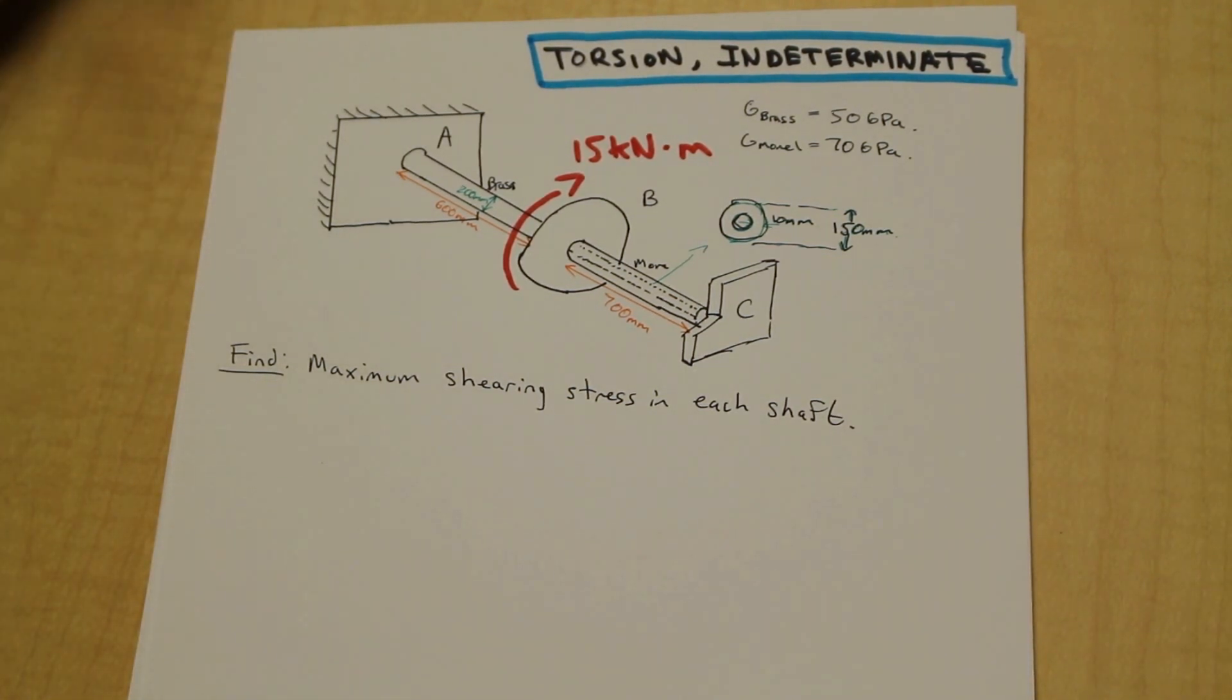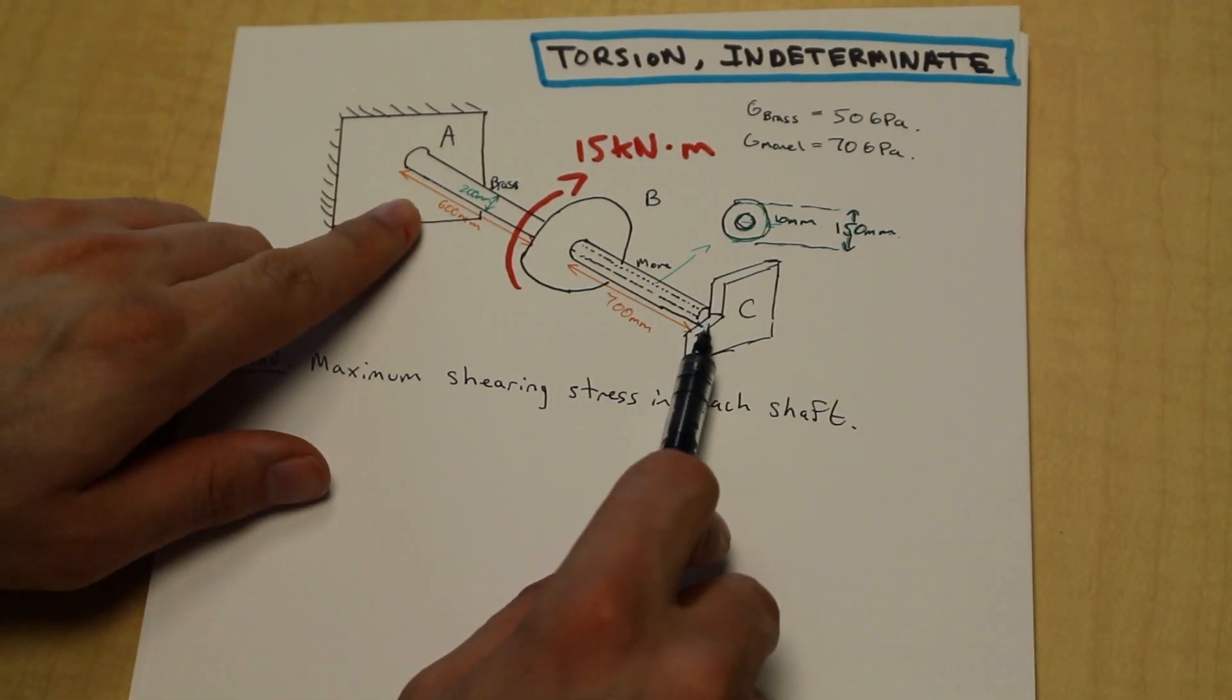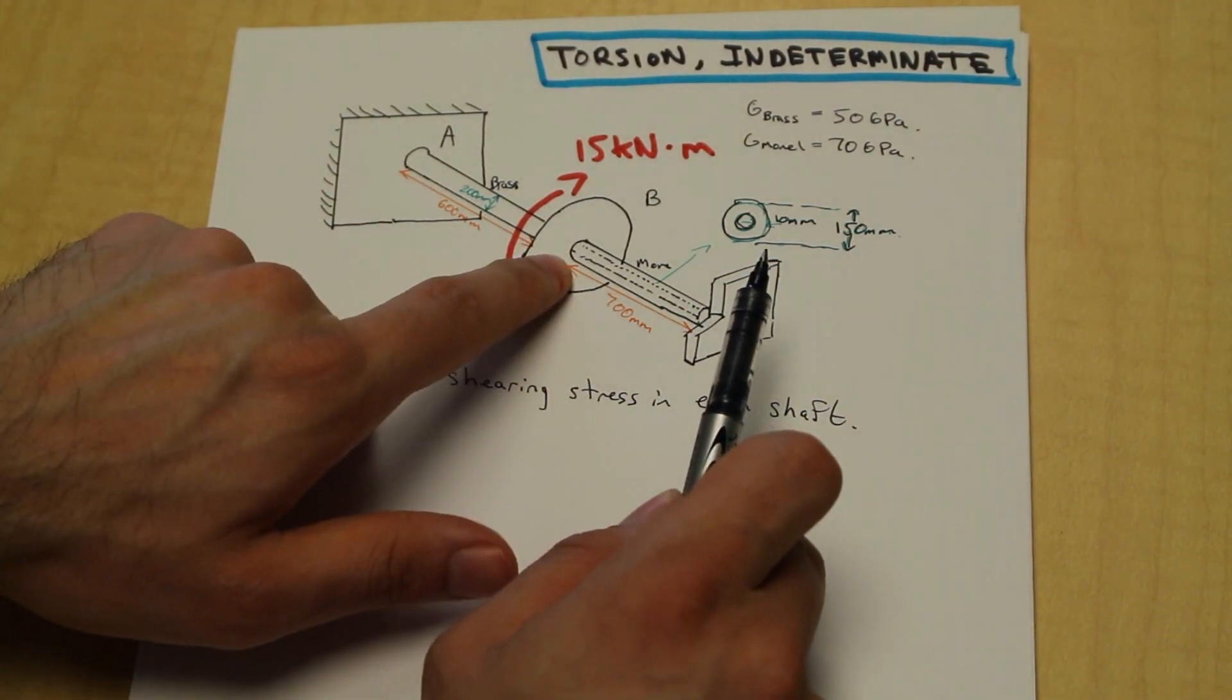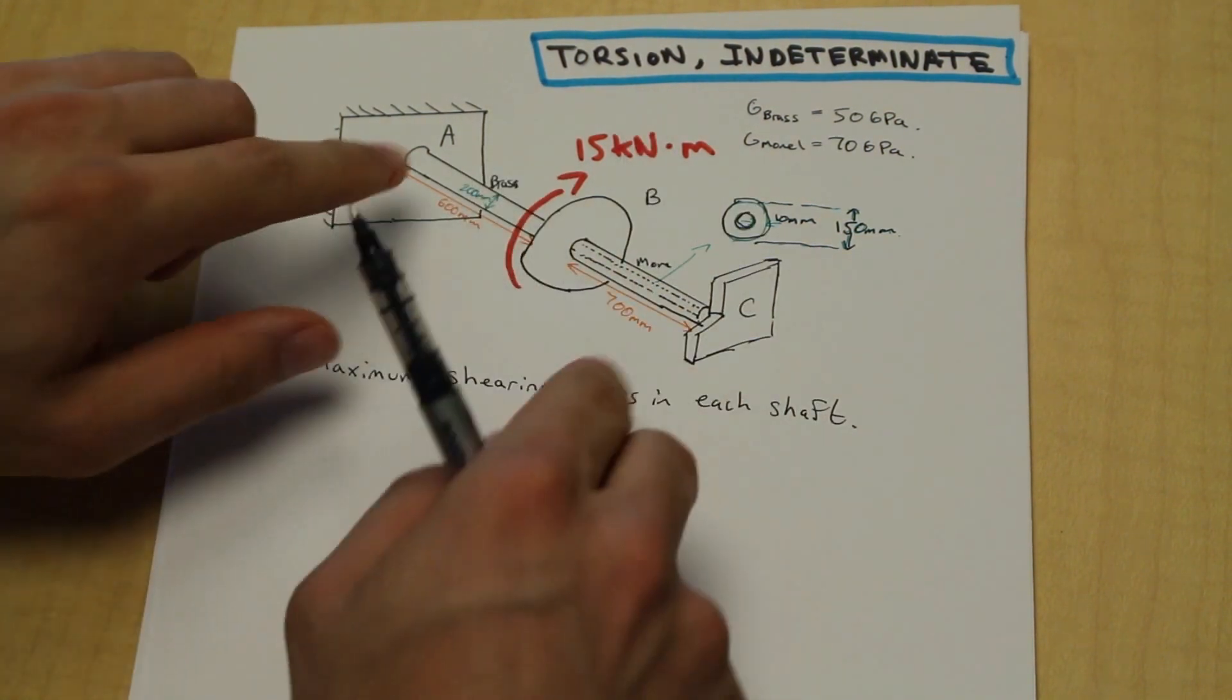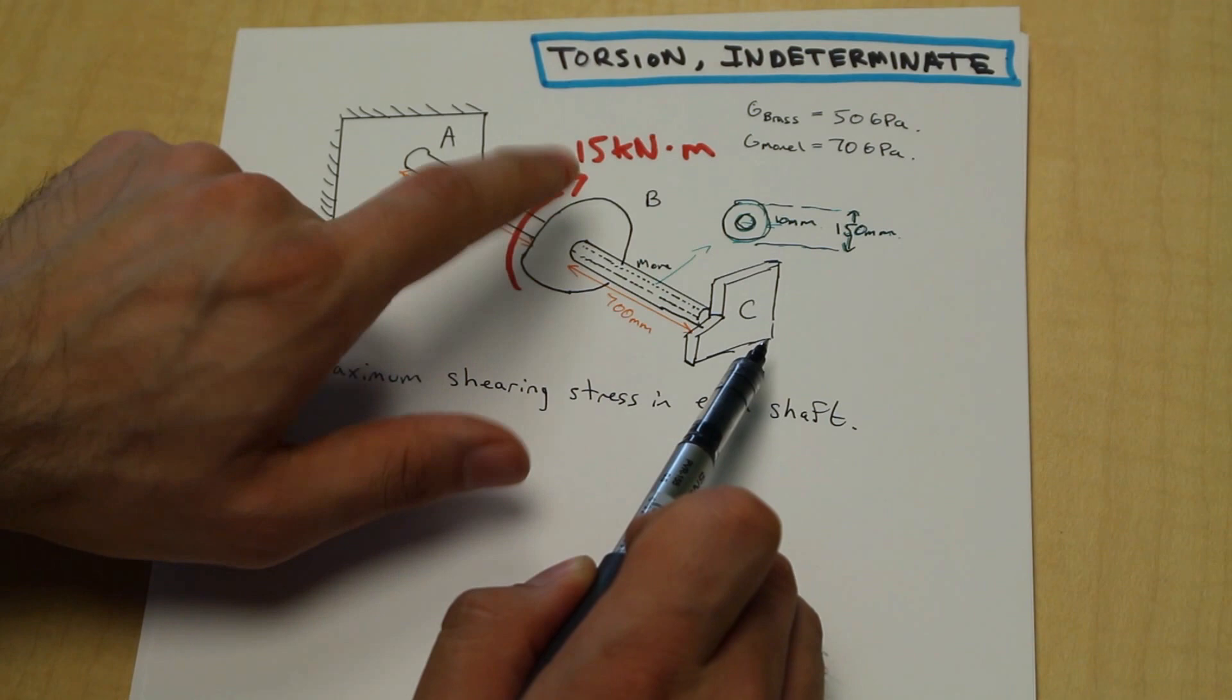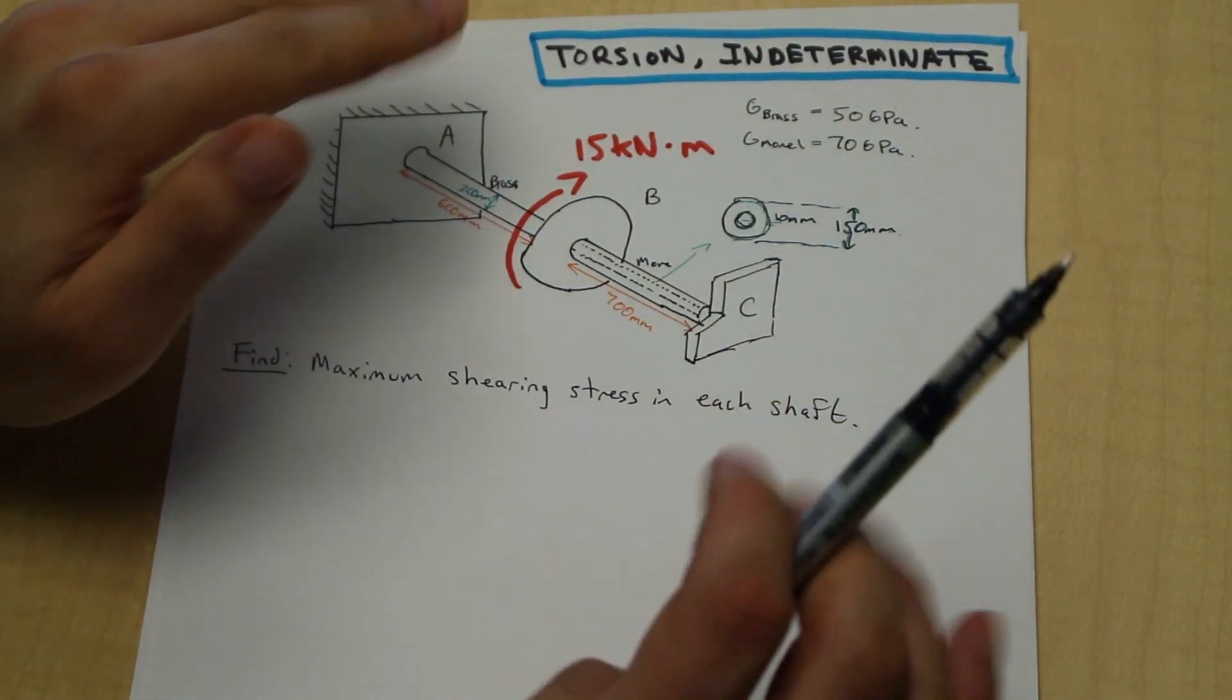Now an indeterminate problem, what does that mean? An indeterminate problem means that we have more unknowns than the number of equations that we have. And what that means is we can't directly solve for the unknown torques in this question. So if we look here we have two fixed cantilever supports, two fixed supports and we have a single torque. So we're only going to be able to make one equation. We're going to have a reactionary torque at A, we're going to have a reactionary torque at C, and we're going to have a torque at B which we know. So that's going to be two unknowns with one equation. We can't solve for that directly.